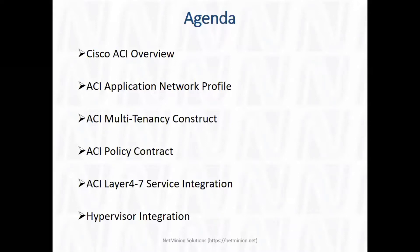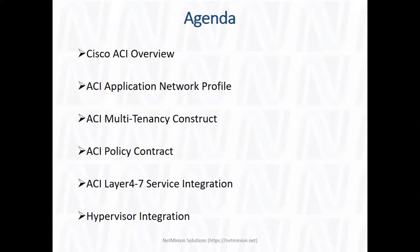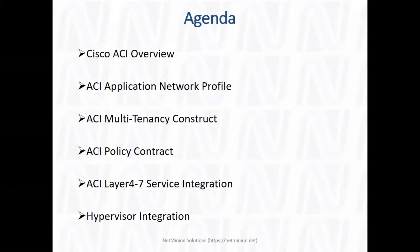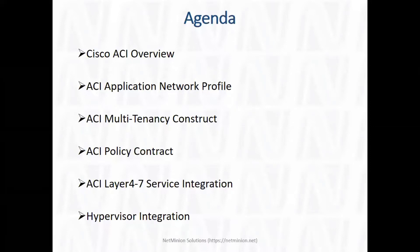Then we'll talk about L3 out connectivity — if you have a legacy network or external connectivity like MPLS, or a firewall in the DMZ doing routing, how you can do L3 out so the fabric can extend connectivity to the external network and learn those routes. If endpoints want to communicate to them, that will be possible. We'll also cover scenarios with multiple L3 outs — transit routing, where an endpoint behind one L3 out wants to talk to an endpoint behind another L3 out.